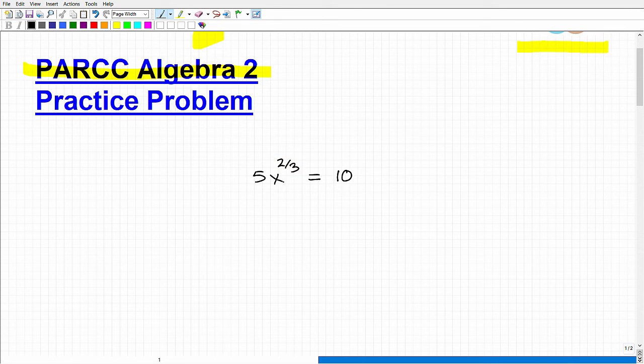First things first, you want to go ahead and isolate the variable and the power. So I'm going to divide both sides of the equation by 5. That gives me x to the 2/3 power equals 2. So hopefully everybody got that. But now, what do I do with this? How do I address this situation?